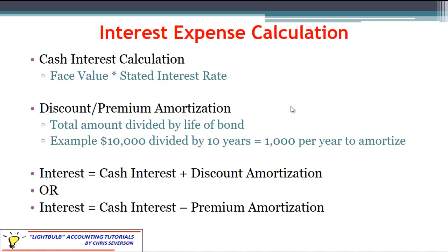To explain what we've been doing: first we calculate the cash interest paid, which is simply the face value multiplied by the stated interest rate — that's very important, it's the stated rate, not the market rate. This is the key difference between the straight-line method and the effective interest method that we will talk about in a separate module. Under straight-line, we amortize the discount or premium in equal amounts over the life of the bond — for example, a $10,000 discount or premium divided by 10 years gives $1,000 per year.